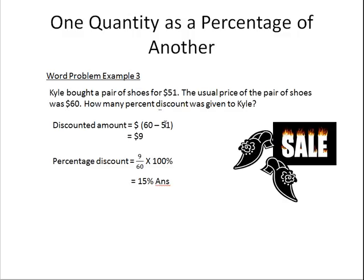As before, we need to find the difference: 60 minus 51, the before and after sale price. So 60 minus 51 is $9 — Keele's discount is $9. To find the percentage discount, we take 9 divided by the original price, $60, multiplied by 100, and this is equal to 15%. And this is the answer.